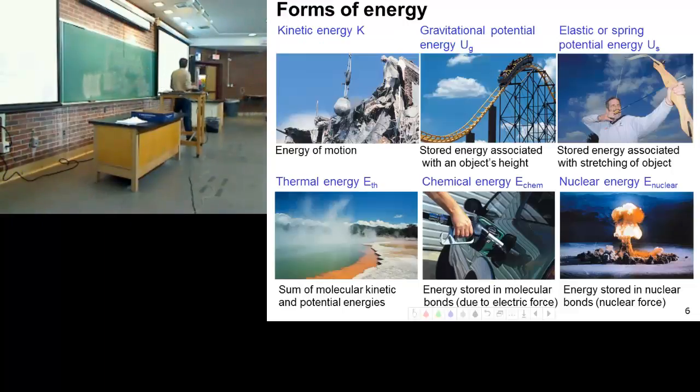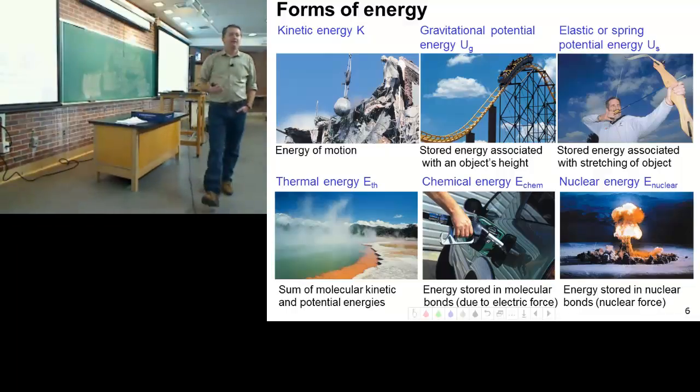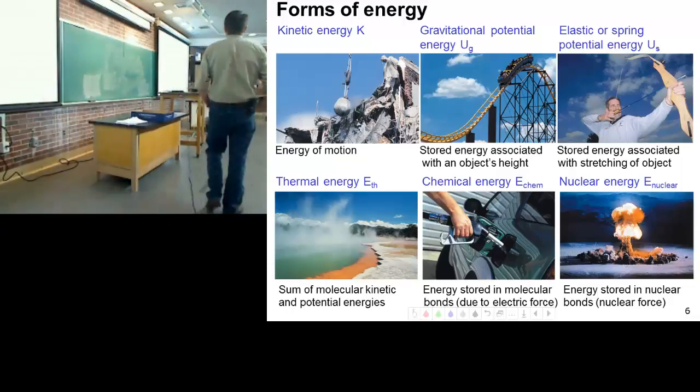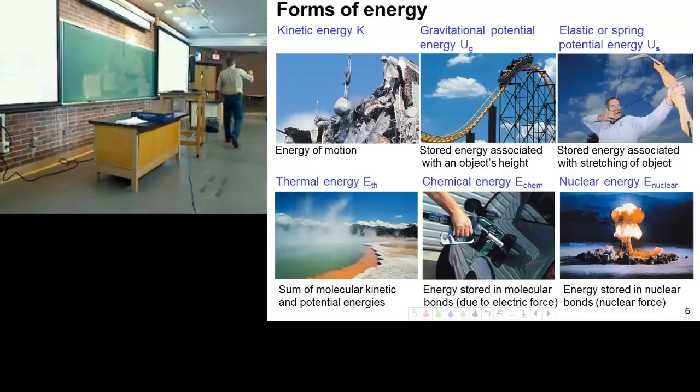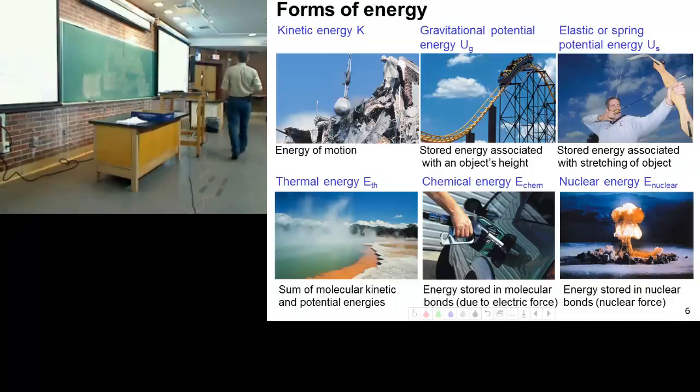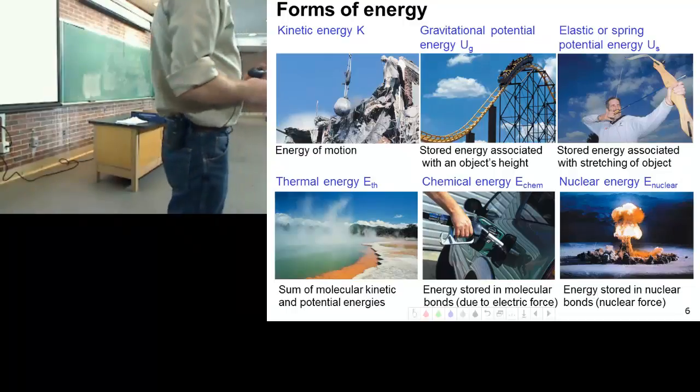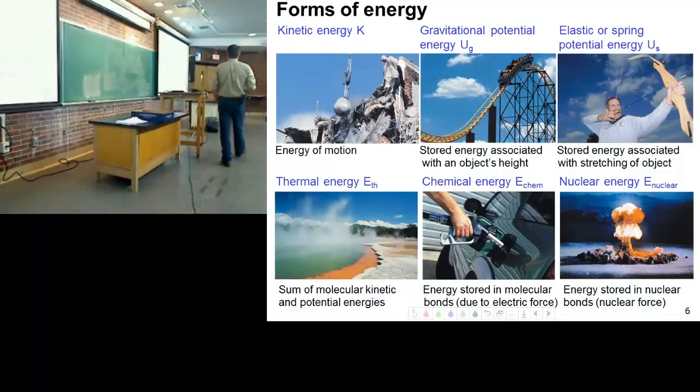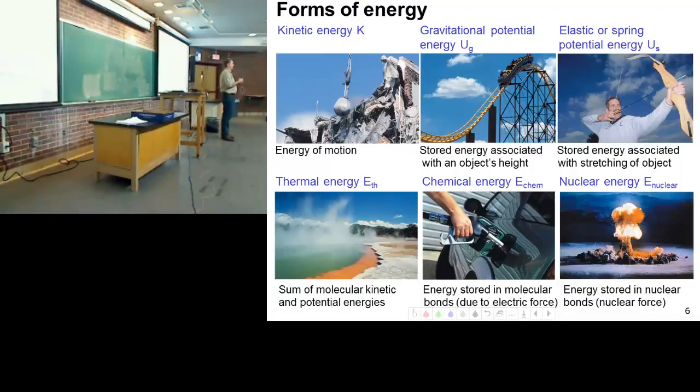There are different forms of energy. We have kinetic energy - that's the energy of motion. If something is moving, it has kinetic energy. There is gravitational potential energy - where it is matters. Elastic or spring energy - if I take a ball and stretch it back, there's energy stored. Thermal energy - at its most fundamental level is molecular motion. The more thermal energy I have, the more molecular motion. Chemical energy is due to molecular bonds.